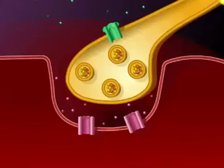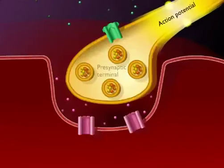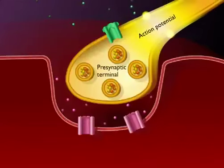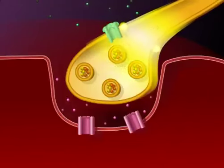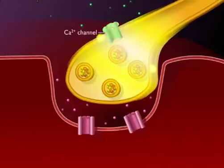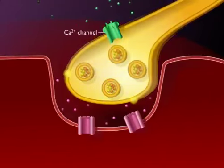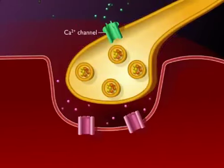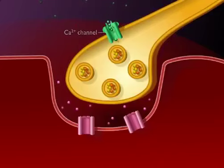An action potential arrives at the presynaptic terminal causing voltage-gated calcium ion channels to open, increasing the calcium ion permeability of the presynaptic terminal cell membrane.